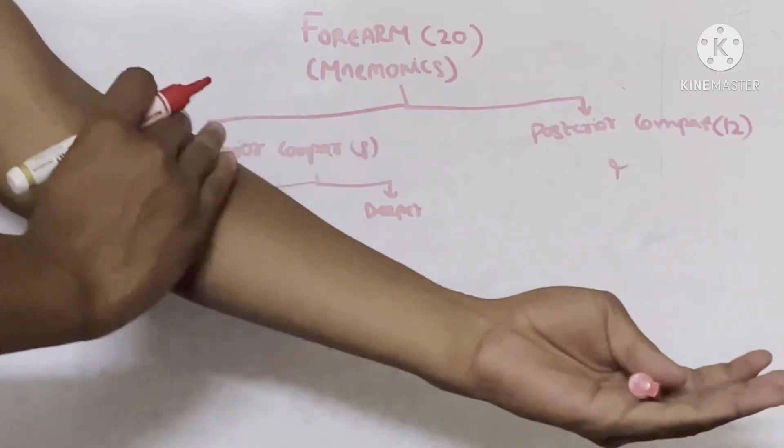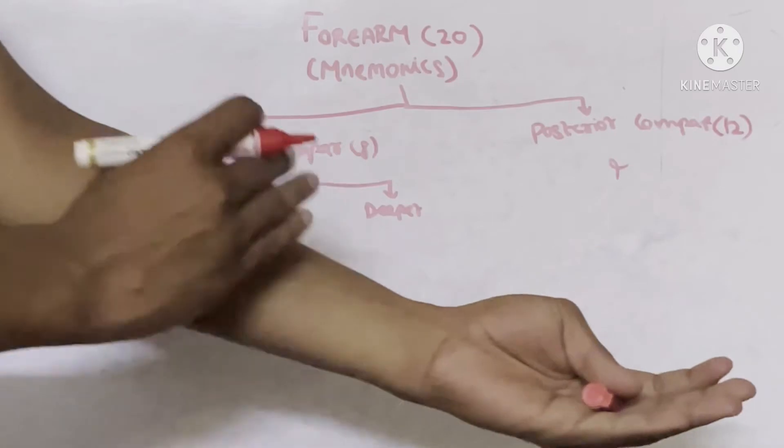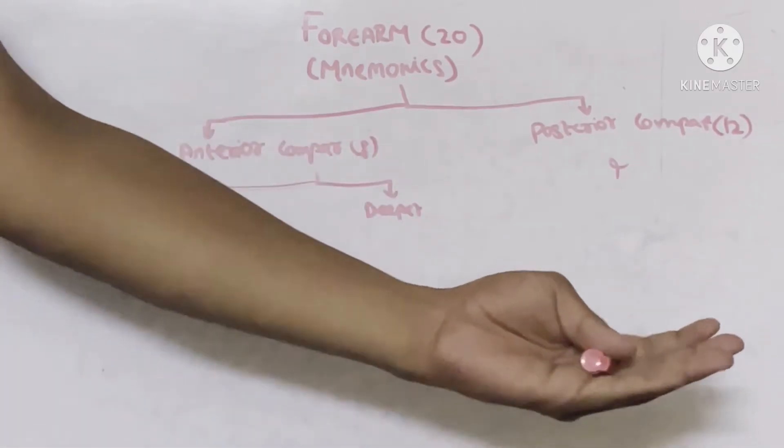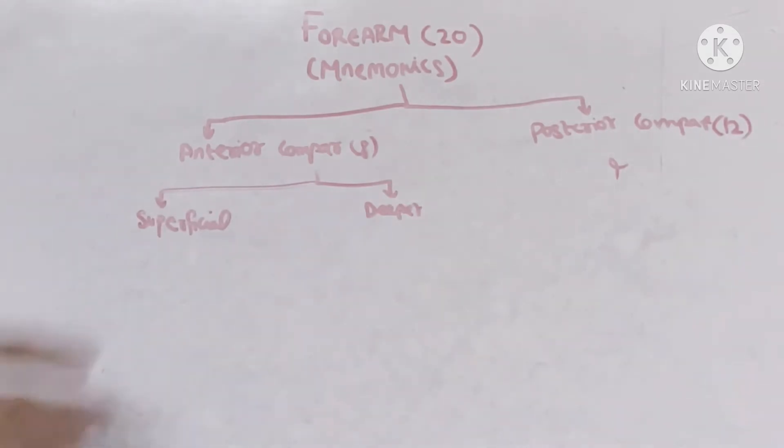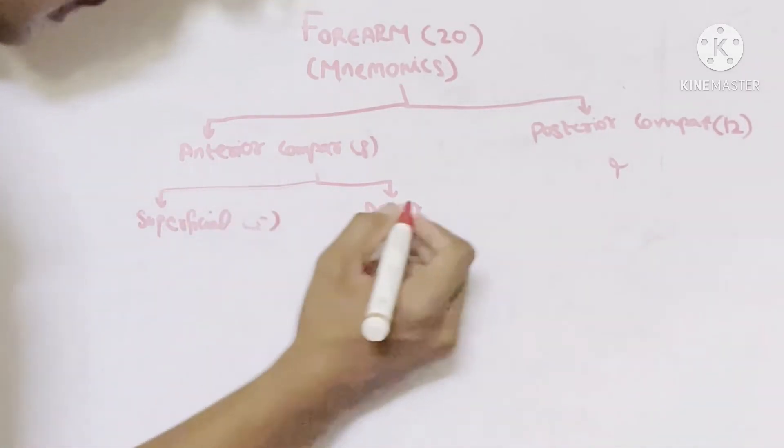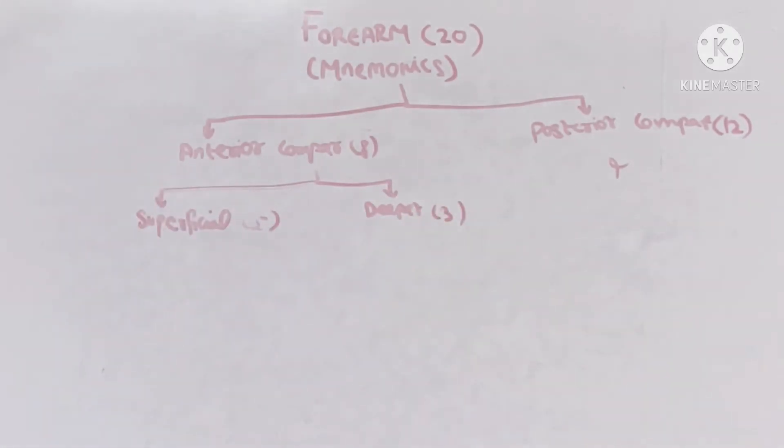If you take anterior compartment, you take out the first group of muscles appearing on the outer surface are superficial muscles and the muscles under the superficial muscles are deeper muscles. Under superficial muscle we have 5 muscles and under deeper muscle we have 3 muscles.